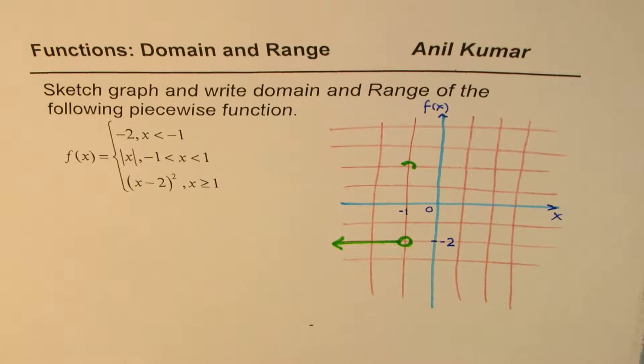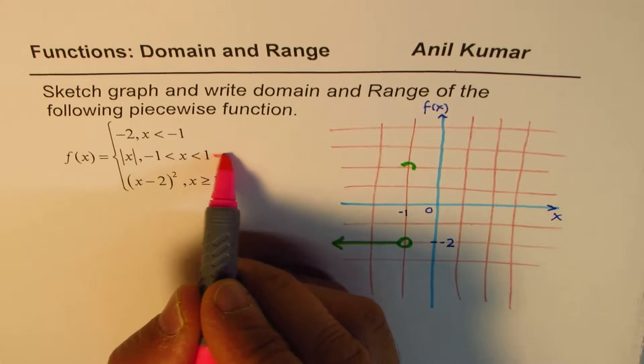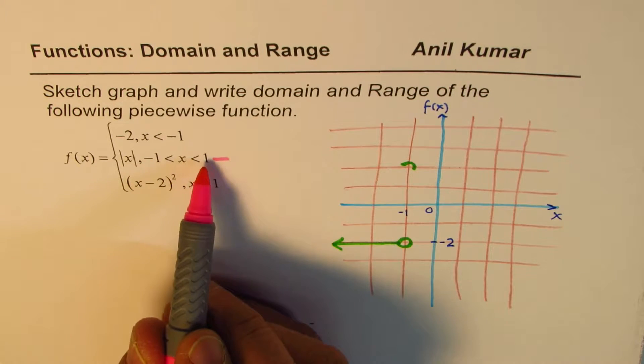Now let's look into the next part, which is absolute x, we'll do this one now, absolute x is between minus 1 and 1.